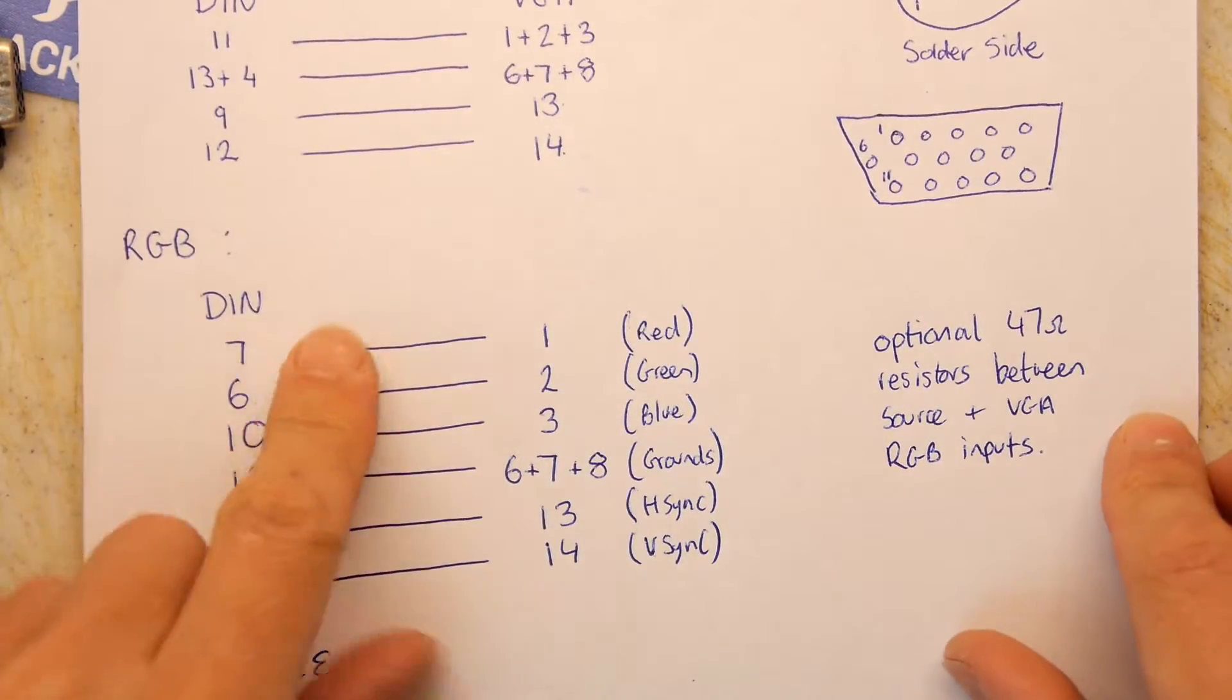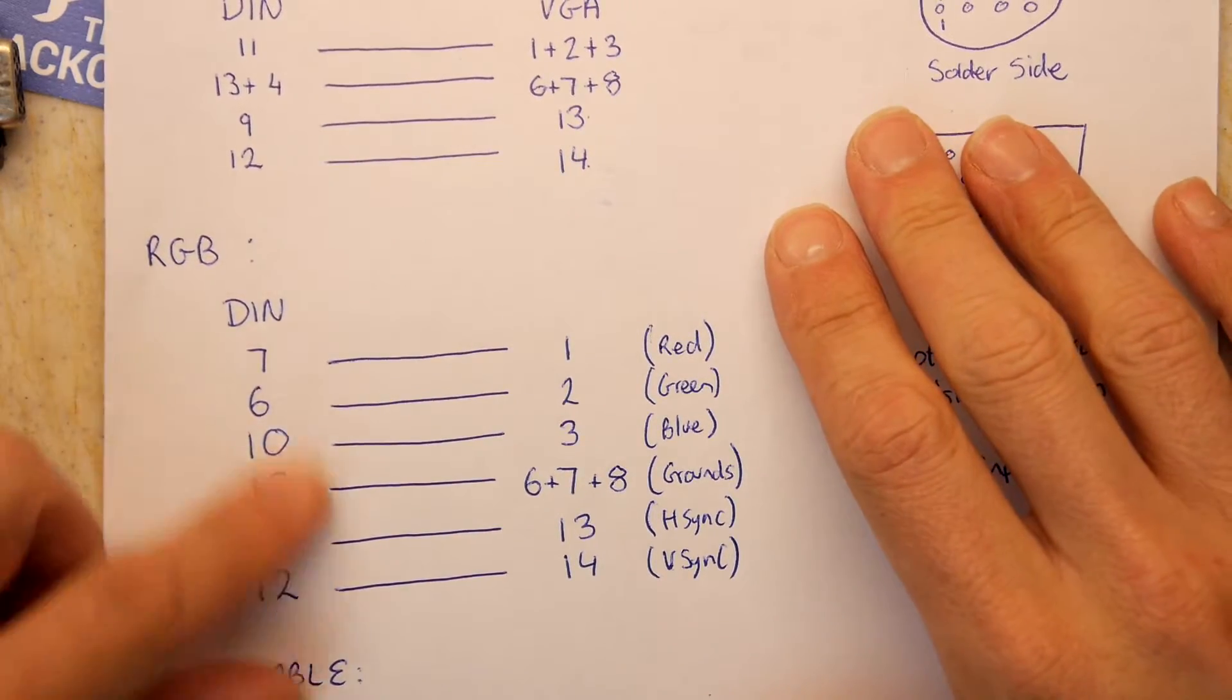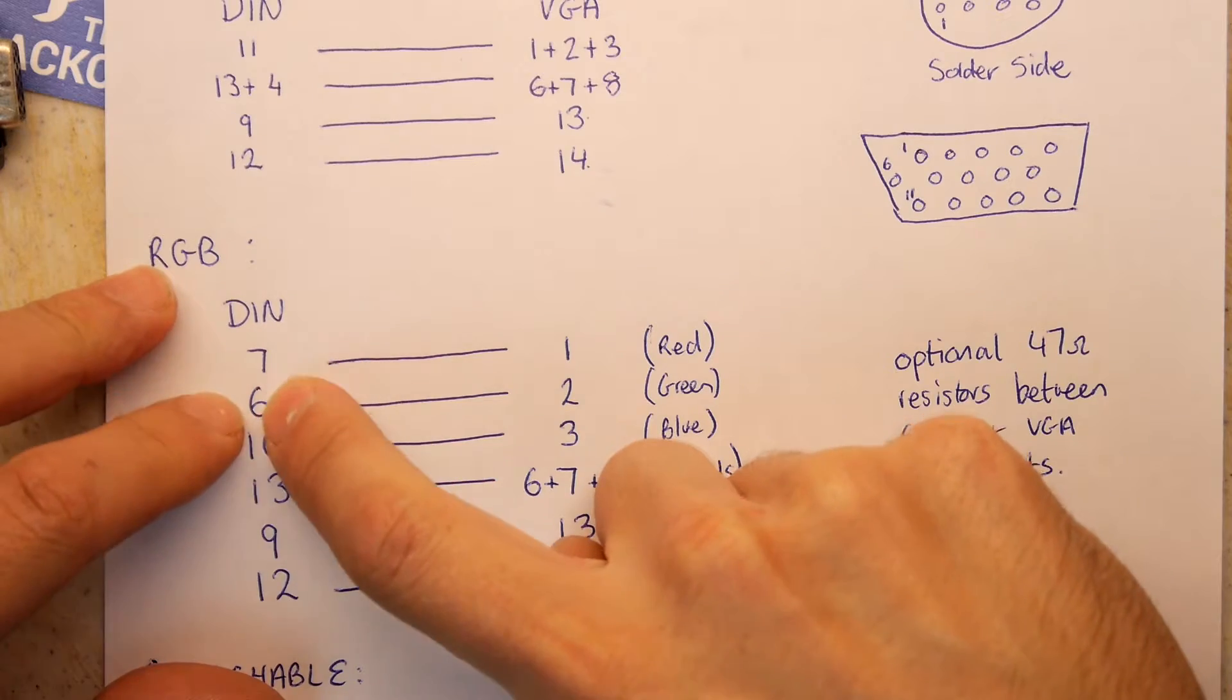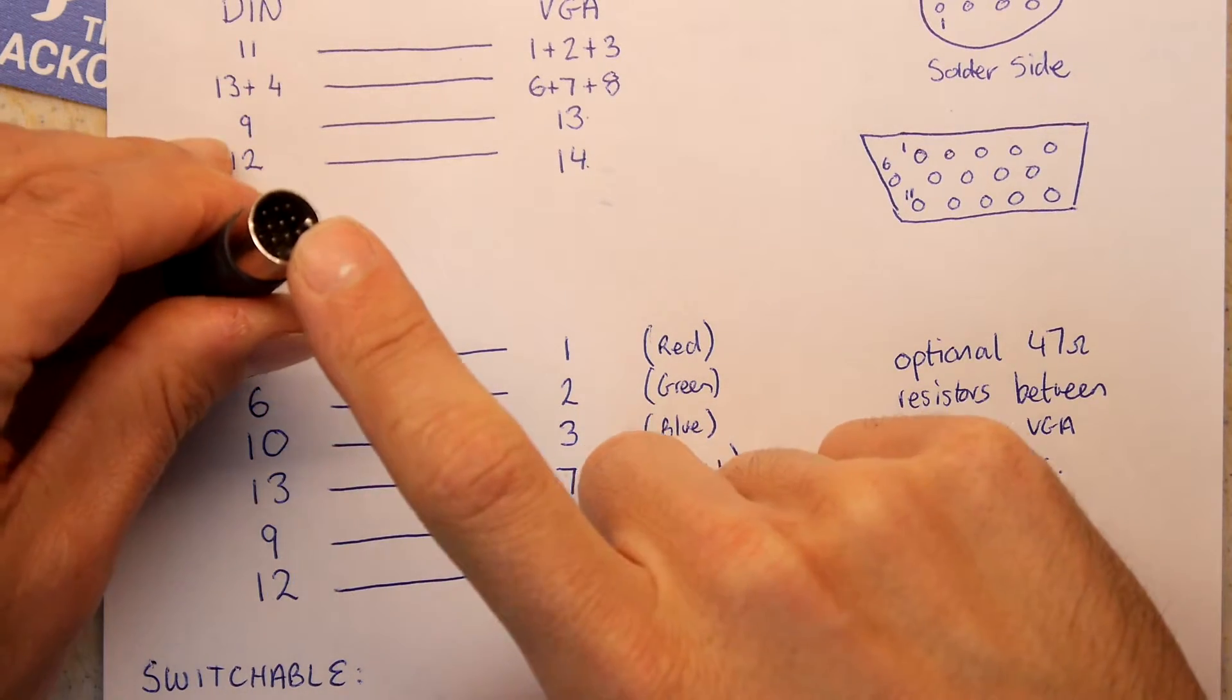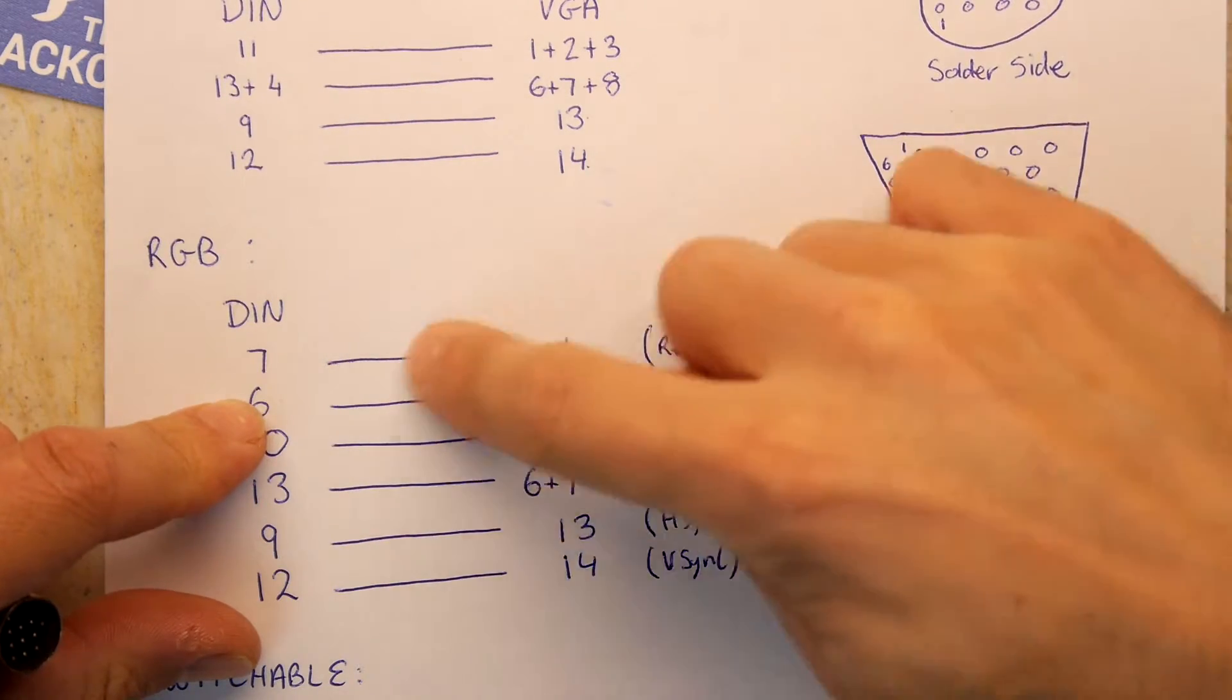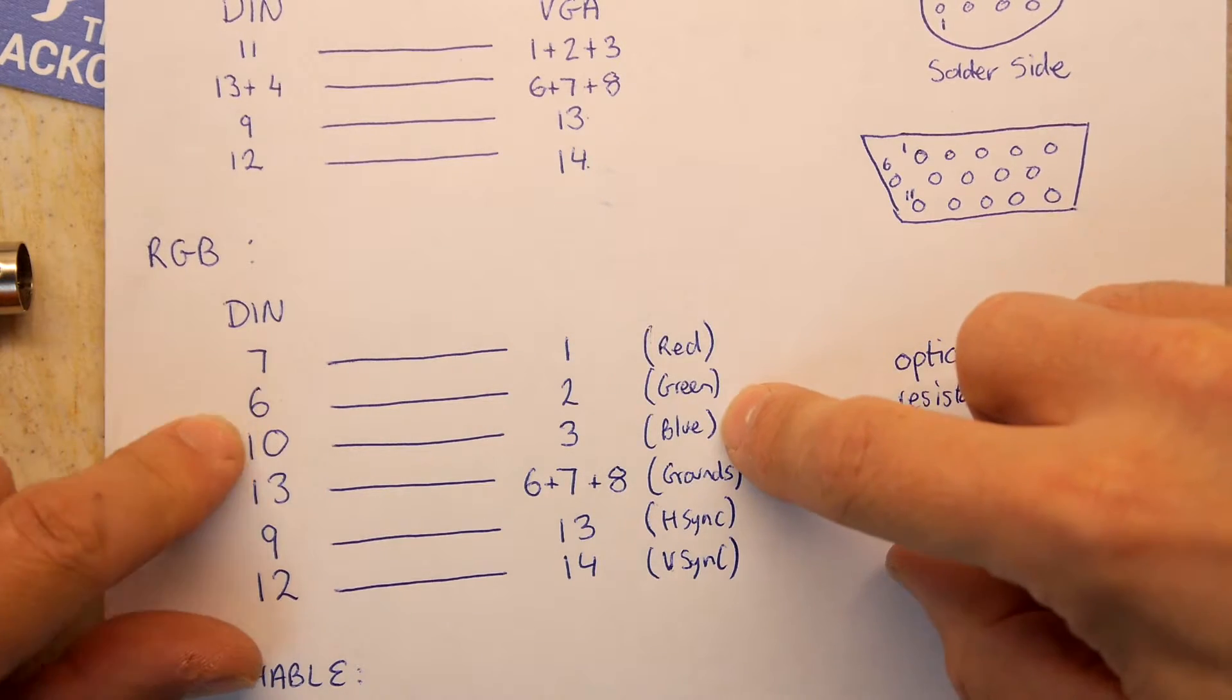Now, if you want to go to the next level, which is the actual RGB, the red, green, and blue, you just have to wire it slightly differently. So what you do is you take your pins 7, 6, and 10 on your DIN. So that's the RGB out of this Atari and go straight through into the PC ones, using the optional resistor if you want to. Don't bother. And that will go straight through to the RGB, red, green, and blue.